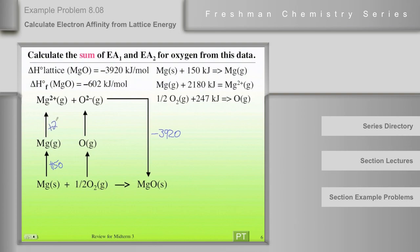Now one half of the bond energy of oxygen is given in this third equation here on the right side, plus 247. And this is EA1 plus 2 for oxygen here.